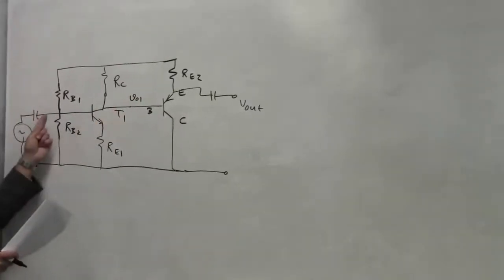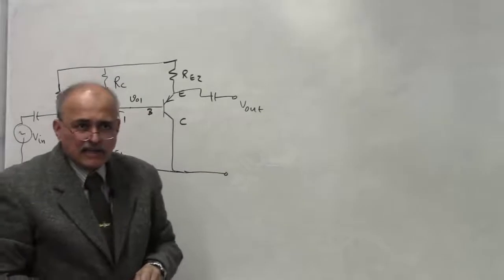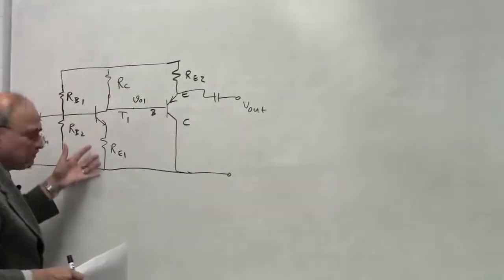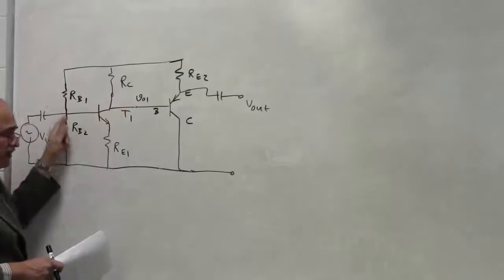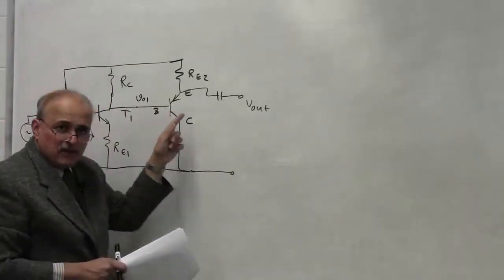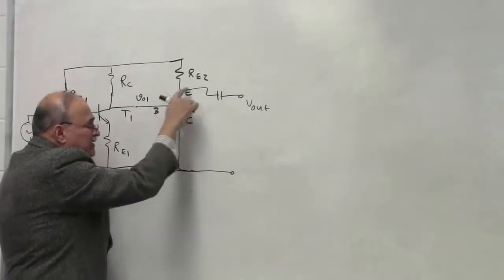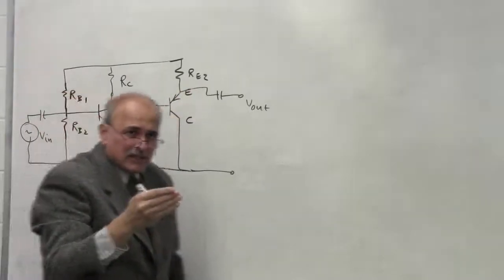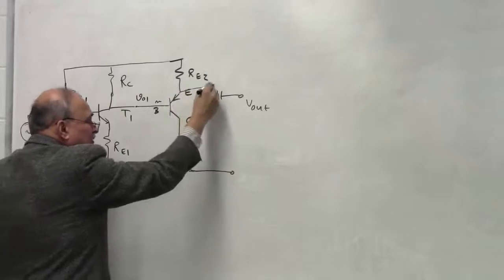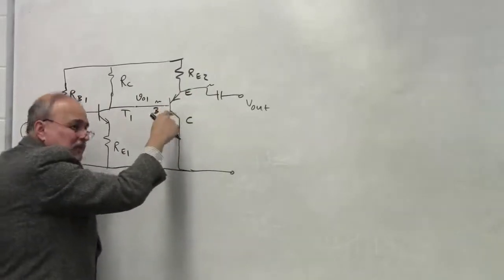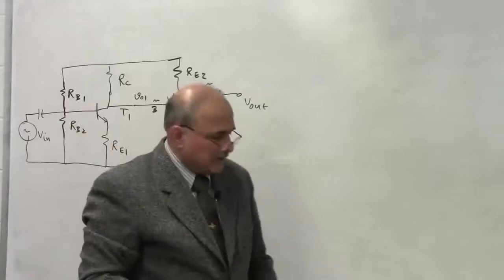The gain Vout1 to Vin is essentially minus Rc over Re, as you did in the previous lab. Under the right conditions, Rc divided by Re with a minus sign is the gain from the first stage. This second stage here is the emitter follower or common collector circuit. The gain of this stage is one, because the emitter voltage and base voltage are only 0.7 volts apart — a DC voltage — so any change at the base is the same change at the emitter. This is a unity-gain amplifier, and the first stage has gain Rc over Re.